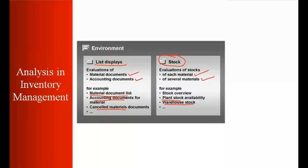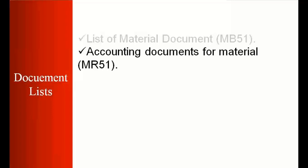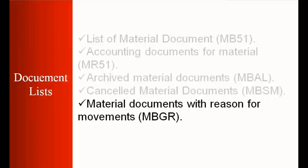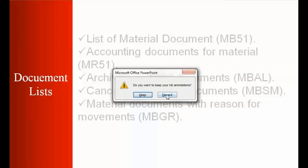We'll start with list display, which covers reporting for documents. There are several transactions available — some we've already used in previous classes, and some new ones. These include MB51 for the list of material documents, archived material documents (MBAL), cancelled material documents (MBSM), and material documents with reason for movement.